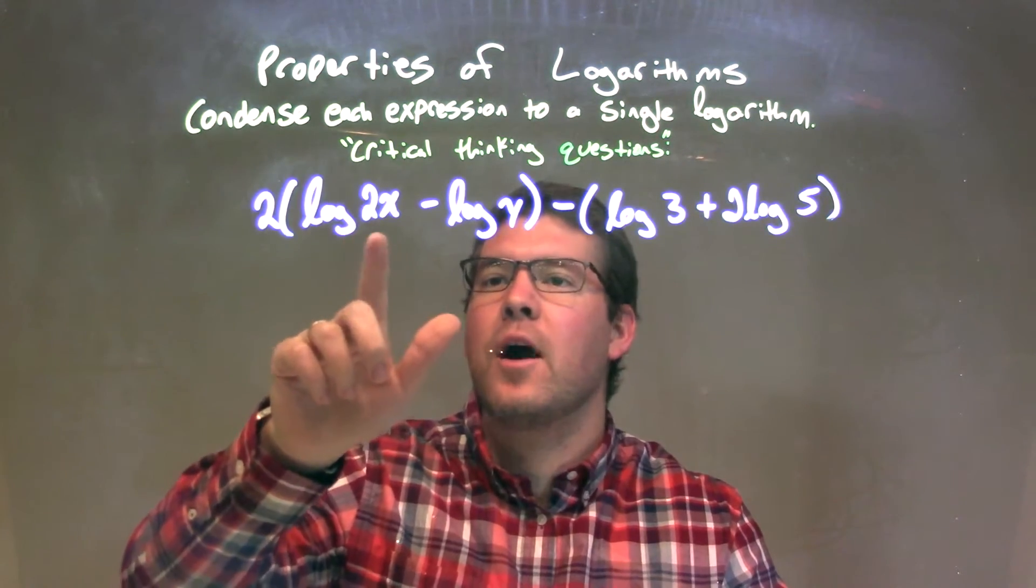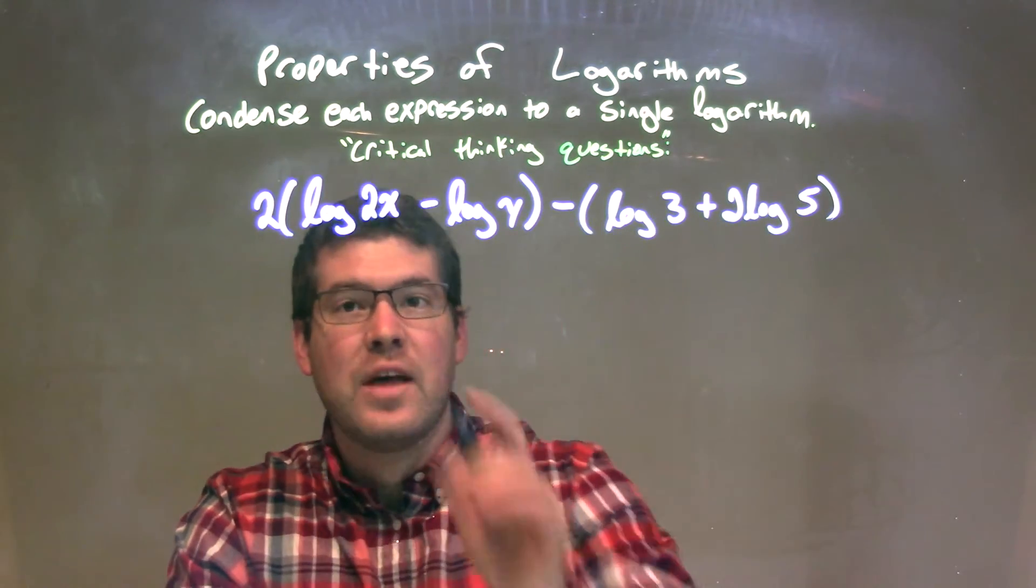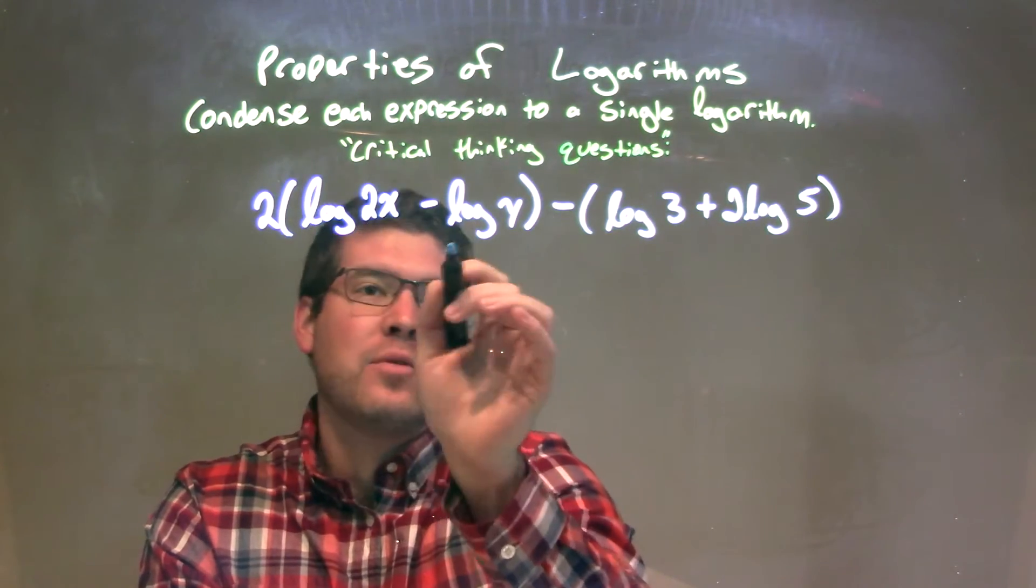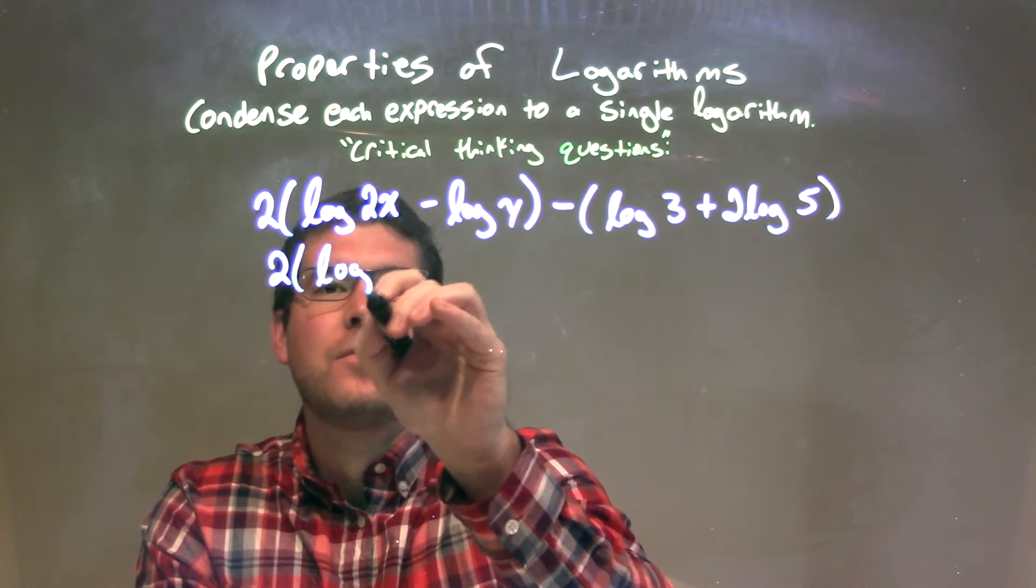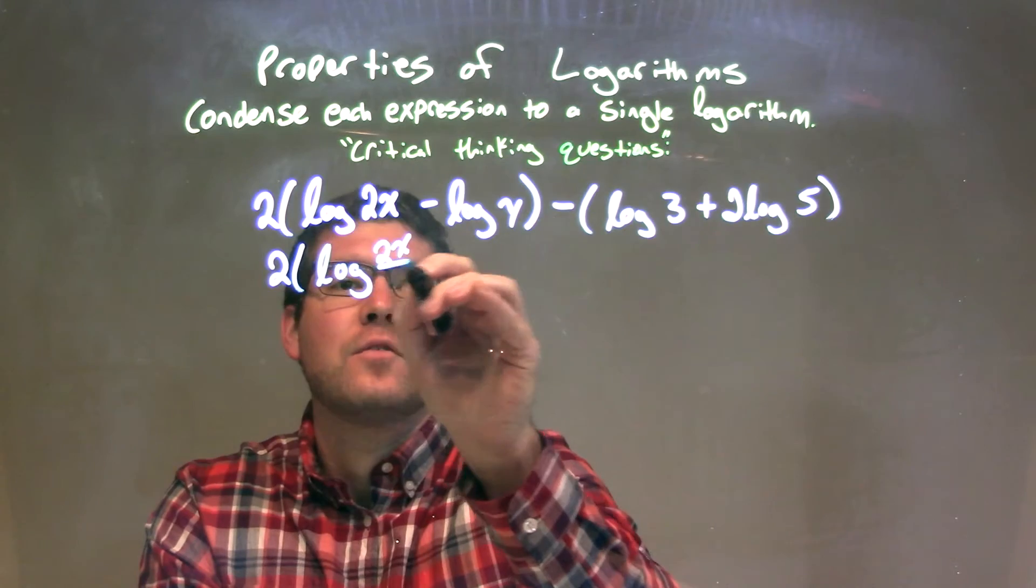We have log of 2x minus log of y, so if I can condense that, that's division, right? It goes to log of the same base. We have 2 outside times, now, log of the same base of 2x divided by y.